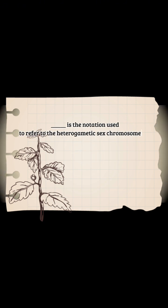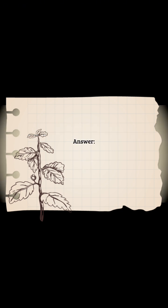Is the notation used to refer to the heterogametic sex chromosomes of a hen: A - ZZ, B - ZW, C - XX, D - XY? Answer: B - ZW.